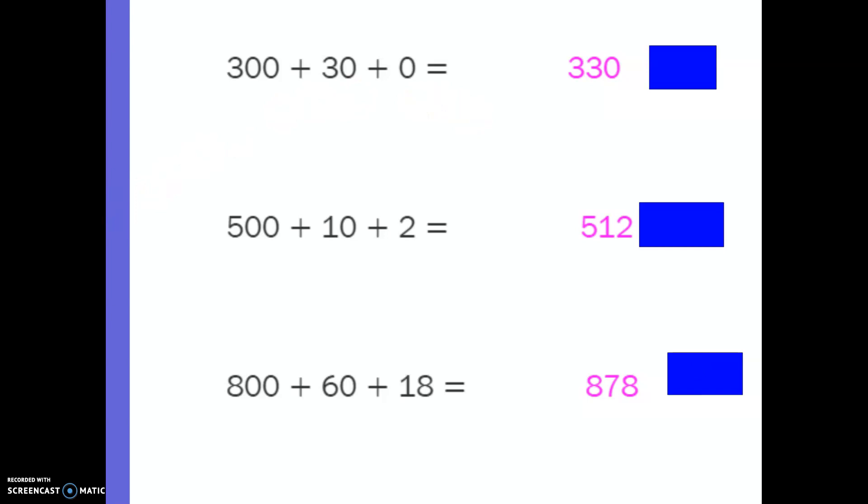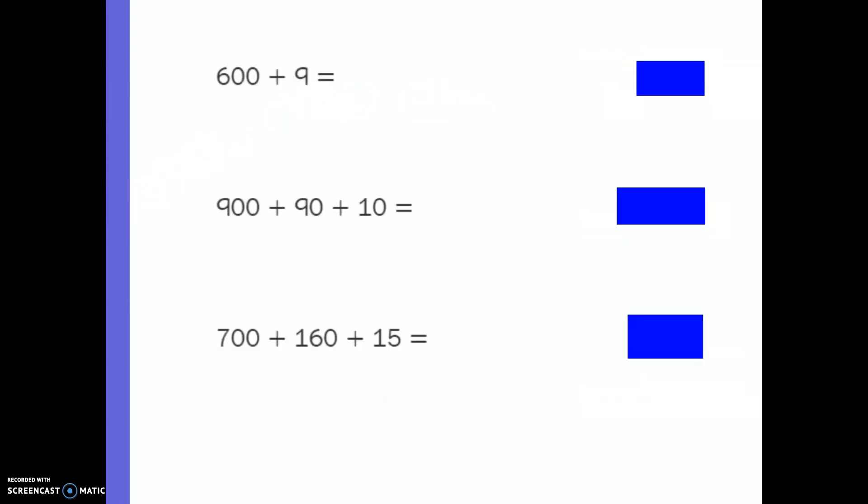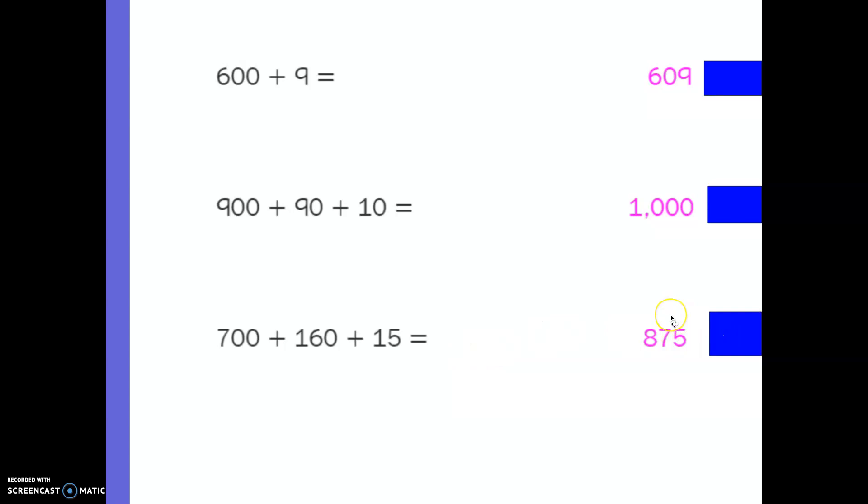Write down the answers and we'll go over them. So 300 plus 30 plus 0 is 330. 500 plus 10 plus 2 is 512. 800 plus 60 plus 18 is 878. Erase. We're going to try it one more time. Here we go.